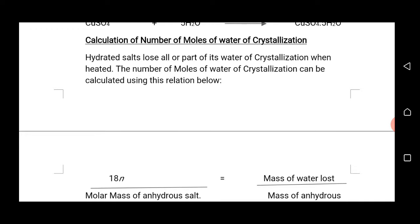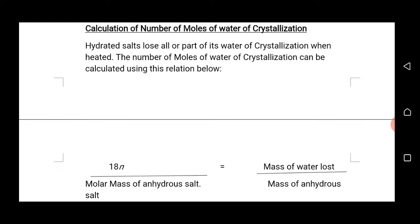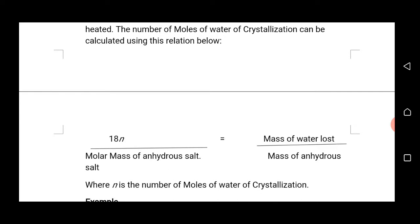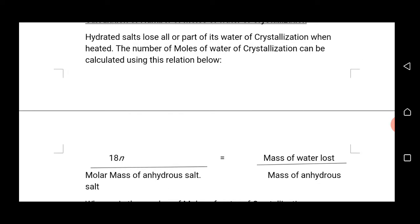Now we are going to look at the calculation of the number of moles of water of crystallization associated with some hydrated salts. Hydrated salts lose all or part of their water of crystallization when they are heated. The number of moles of water of crystallization lost or contained in a particular hydrated salt can be calculated using the following relation.